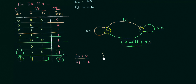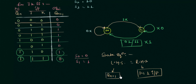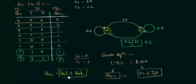Now the last part is the state equation. The state equation is an equation in which the left-hand side (LHS) is the next state Qn+1, and the right-hand side (RHS) is the combination of the present state and the input. This combination of present state and input makes Qn+1 equal to 1. For the JK flip-flop, the state equation is: Qn+1 = Qn_complement · J + Qn · K_complement.